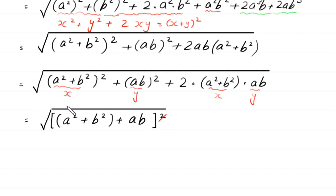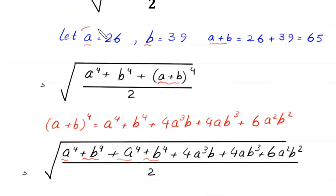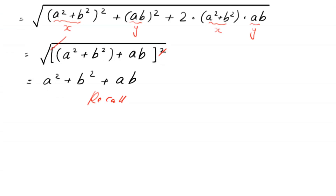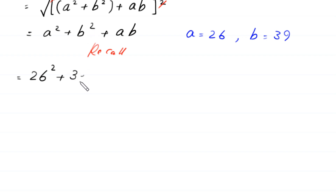Now, the square will be cancelled out with this square root, and we are left with A squared plus B squared plus A times B. Recall that we supposed A is equal to 26 and B is equal to 39. So in place of A squared we write 26 squared, in place of B squared we write 39 squared, and in place of A times B we write 26 times 39.